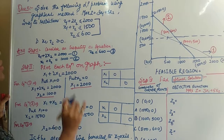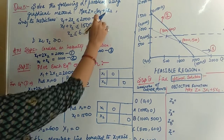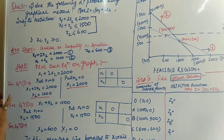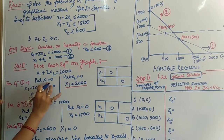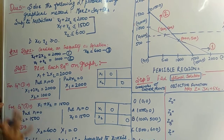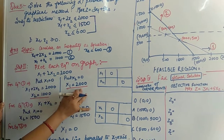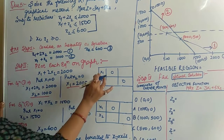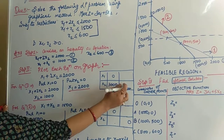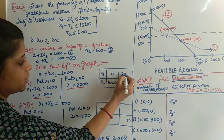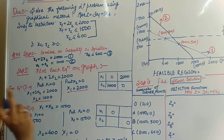After that, you have to obtain the values of the coordinates x1 and x2 by solving them. Putting x1 = 0 in Equation 1, we get x2 = 1000. Putting x2 = 0, we get x1 = 2000. So the points for Equation 1 are (0, 1000) and (2000, 0).